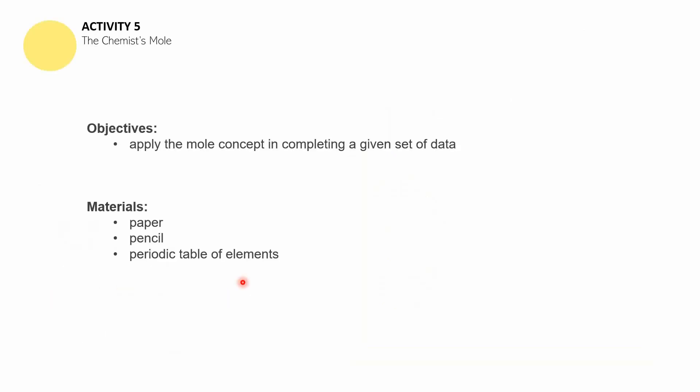For the first part, The Chemist's Mole, we have the following objects used. Hopefully by the end of this activity, you will be able to apply the mole concept in completing a given set of data. You need to review Chemistry 13 for this. If you weren't able to watch it or do the sample problems — around nine sample problems — you may need to go back. You will need paper, pencil, and your periodic table of elements.